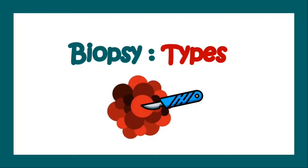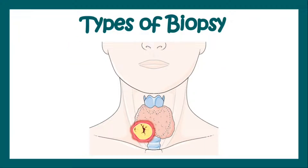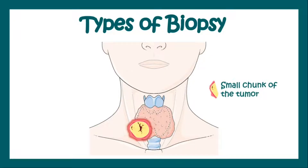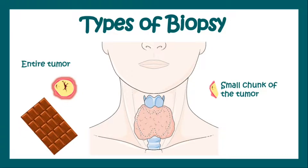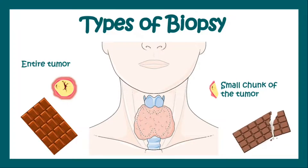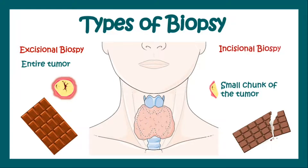Biopsy can be of different types. Suppose in the thyroid gland we have a tumor — from this tumor we can excise out a small chunk and send it for biopsy, or we can take out the entire tumor and send it for biopsy. It's like taking out the entire chocolate bar from the wrapper and sending it for testing, versus taking a small chunk of the chocolate and sending it for analysis. Taking out the entire tumor is known as excisional biopsy, and taking out a small chunk is known as incisional biopsy.